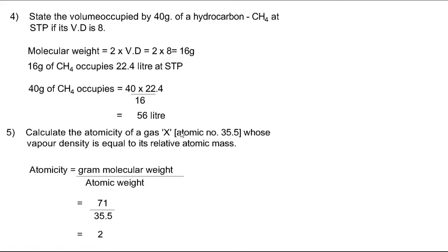Problem 5: Calculate the atomicity of gas X whose atomic weight is 35.5 — that means it is chlorine (Cl₂), a diatomic gas. Its molecular mass = 35.5 × 2 = 71. The vapor density equals its relative atomic mass. Atomicity = gram molecular weight / atomic weight = 71 / 35.5 = 2. So atomicity is 2.